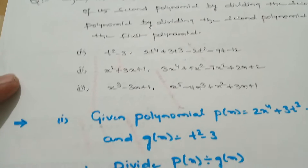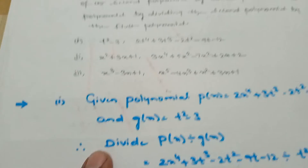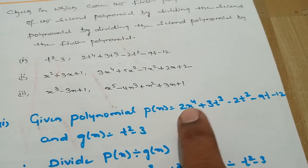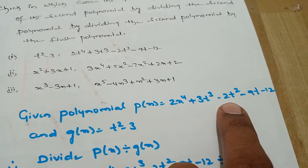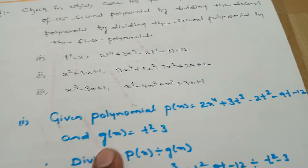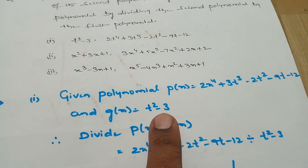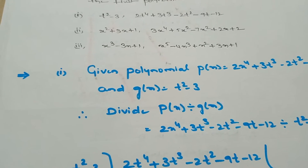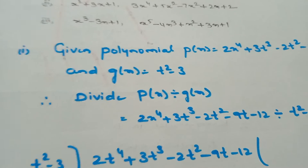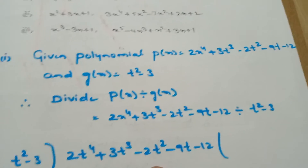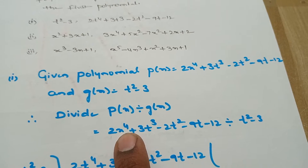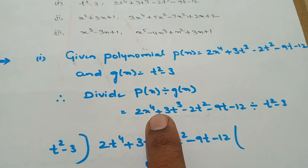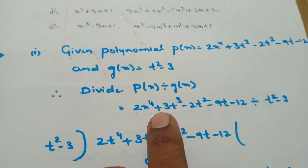They give three sums here, let me solve them. For the first one, the given polynomial p(t) is equal to 2t⁴ + 3t³ - 2t² - 9t - 12, and g(t) is equal to t² - 3. Firstly, we have to see whether the given polynomial is in the standard form or not. The p(t) powers are in the descending order, therefore this is in the standard form.